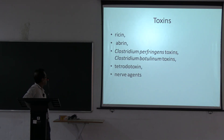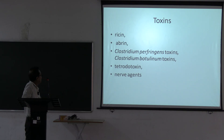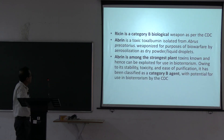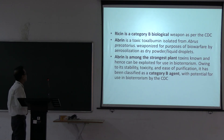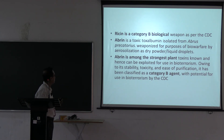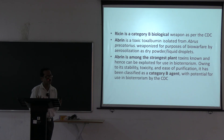Toxins from plants and bacteria include Ricin, Abrin, Clostridium perfringens toxin, Clostridium botulinum toxin, Tetrodotoxin, and Nervagen. Ricin is a Category B biological weapon. Abrin is a toxalbumin and among the most potent plant toxins; it is also a Category B agent.